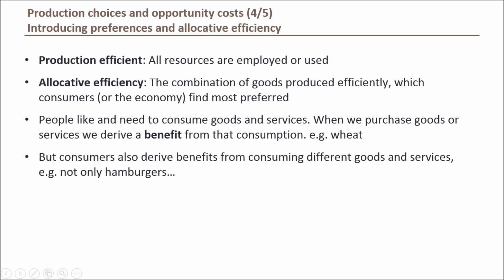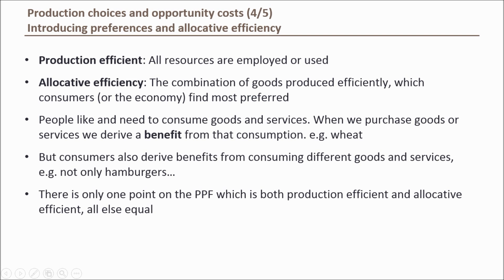But consumers prefer to consume a mix of goods rather than the same good over and over again. For example, no matter how good a hamburger is, you're unlikely to want to eat it for the rest of your life — it's like watching the same movie over and over again. By using what we've learned about marginal cost and combining it with our understanding of benefits, we can find the allocative efficient combination, of which there is only one.